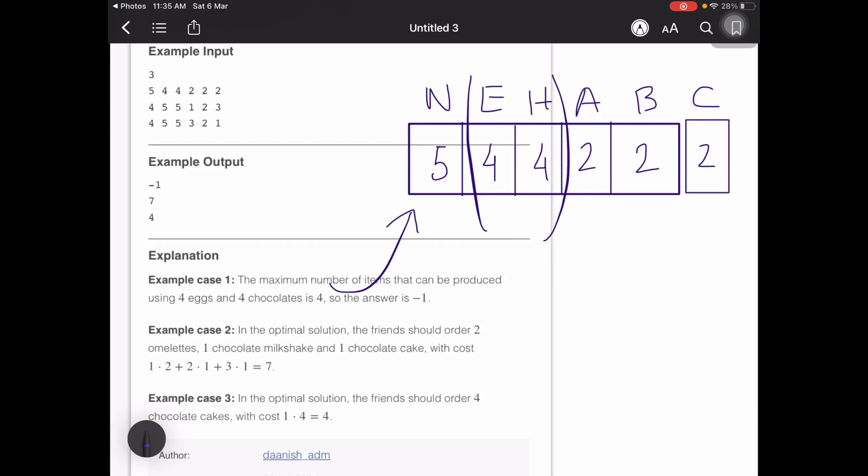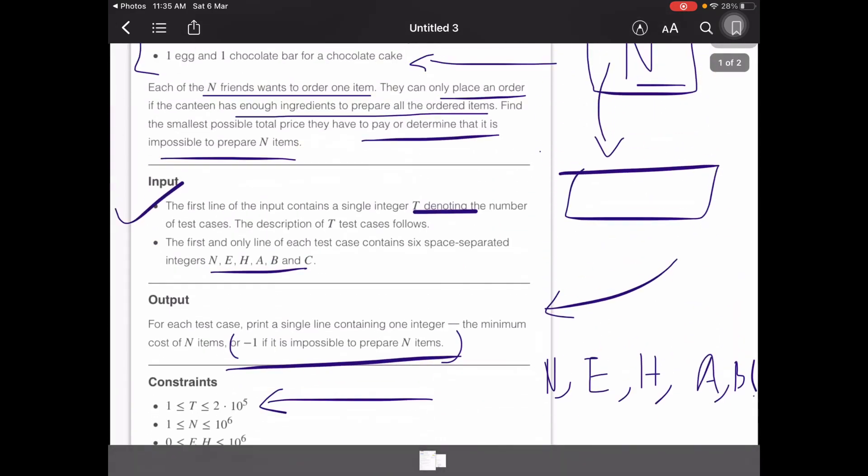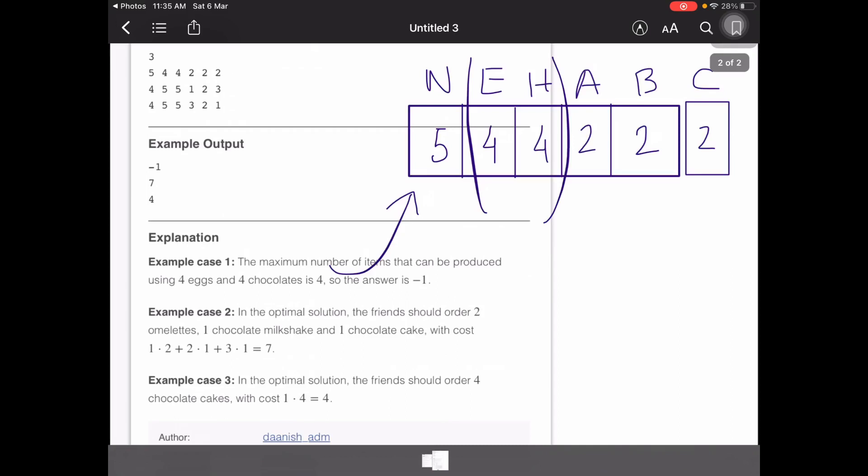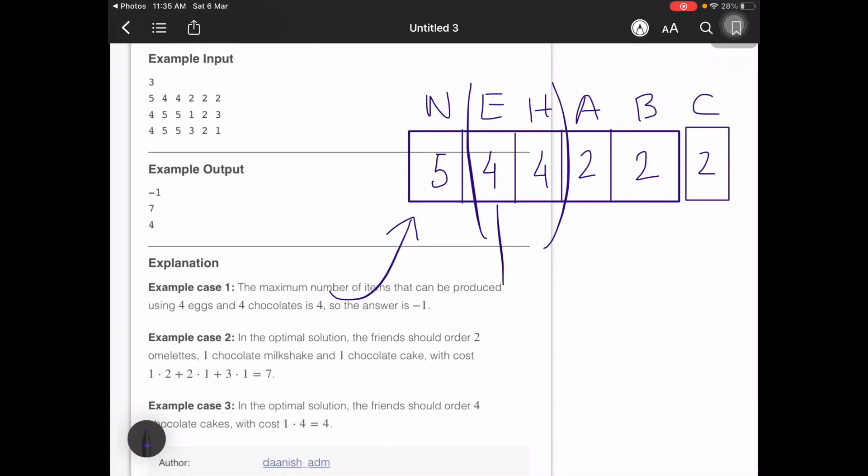The cost minimization comes later on. First we'll have to see can we create that many items. The question says we require 1 egg and 1 chocolate bar for a chocolate cake. If I just keep taking 1 egg and 1 bar, I'll be able to create 4 chocolate cakes.